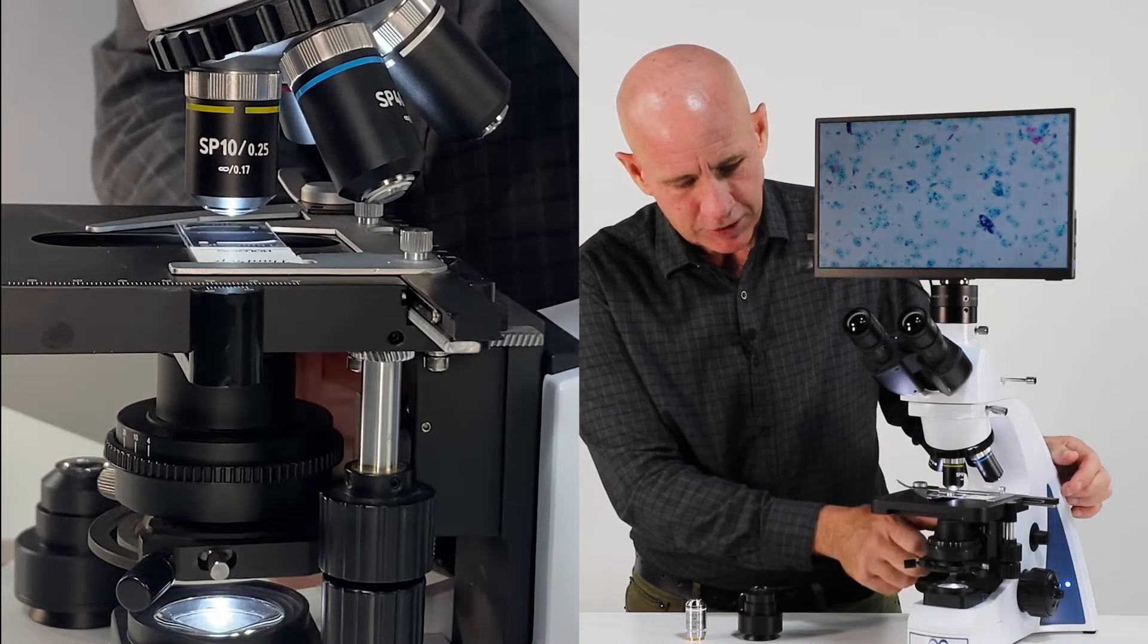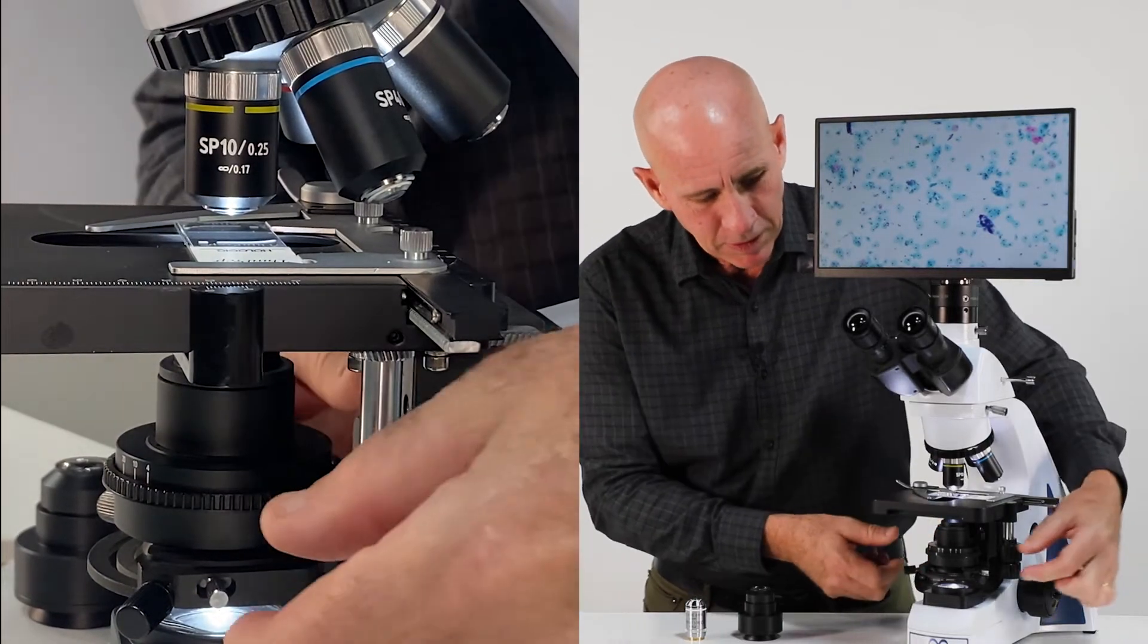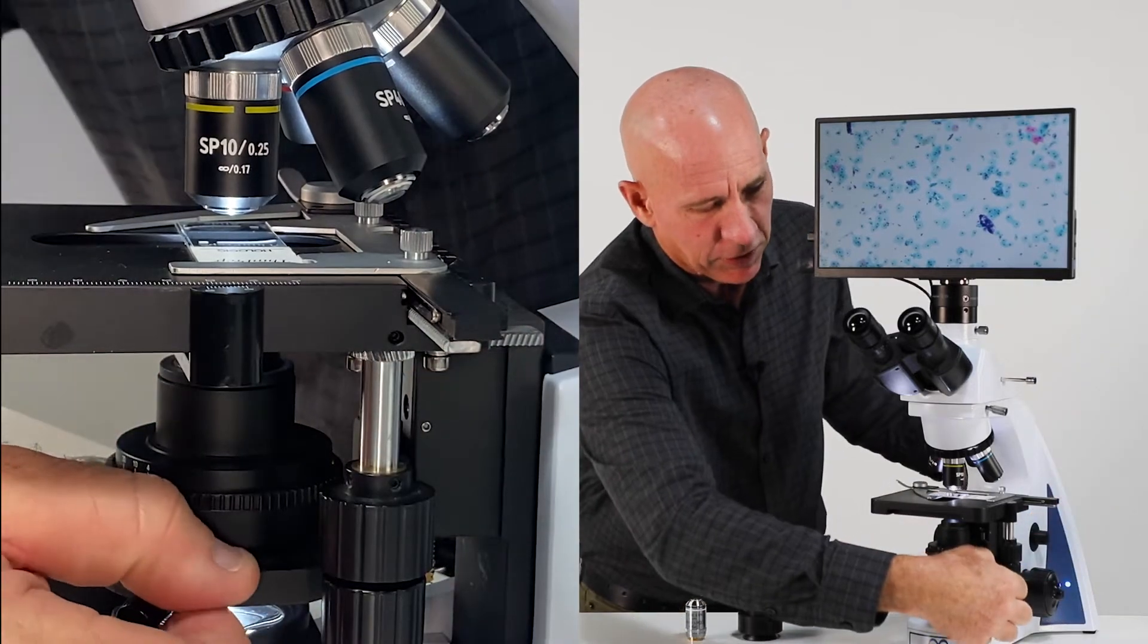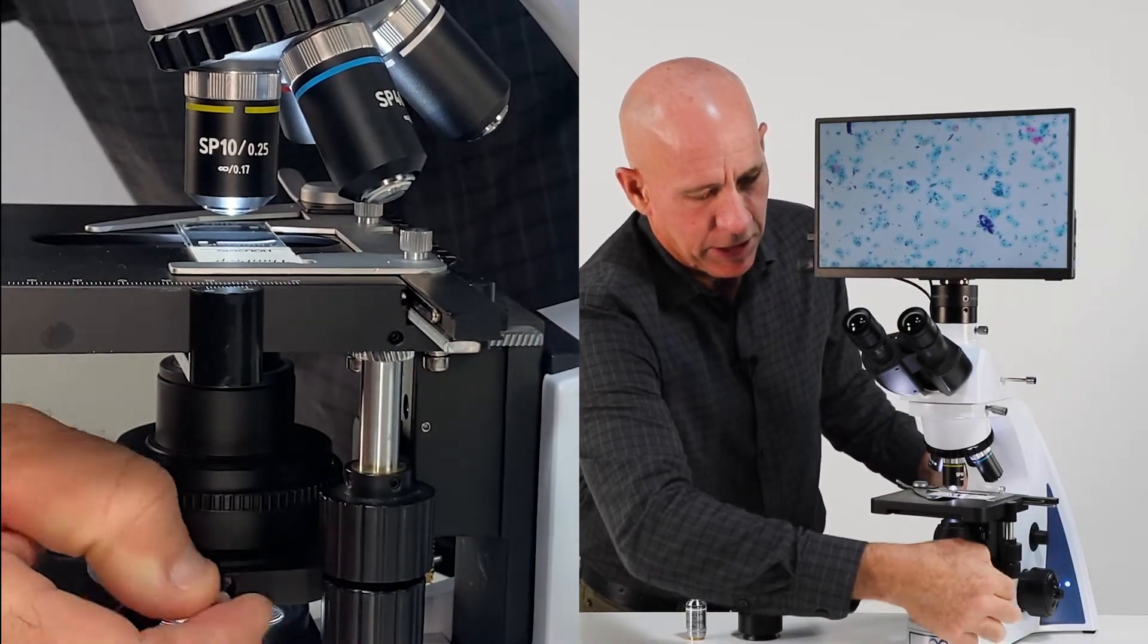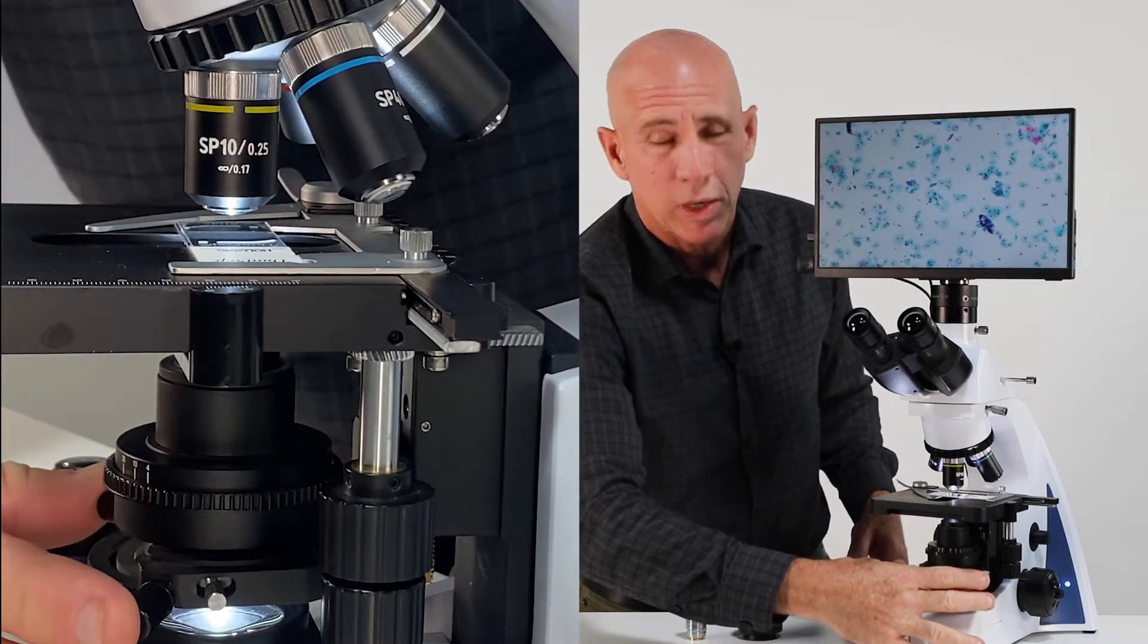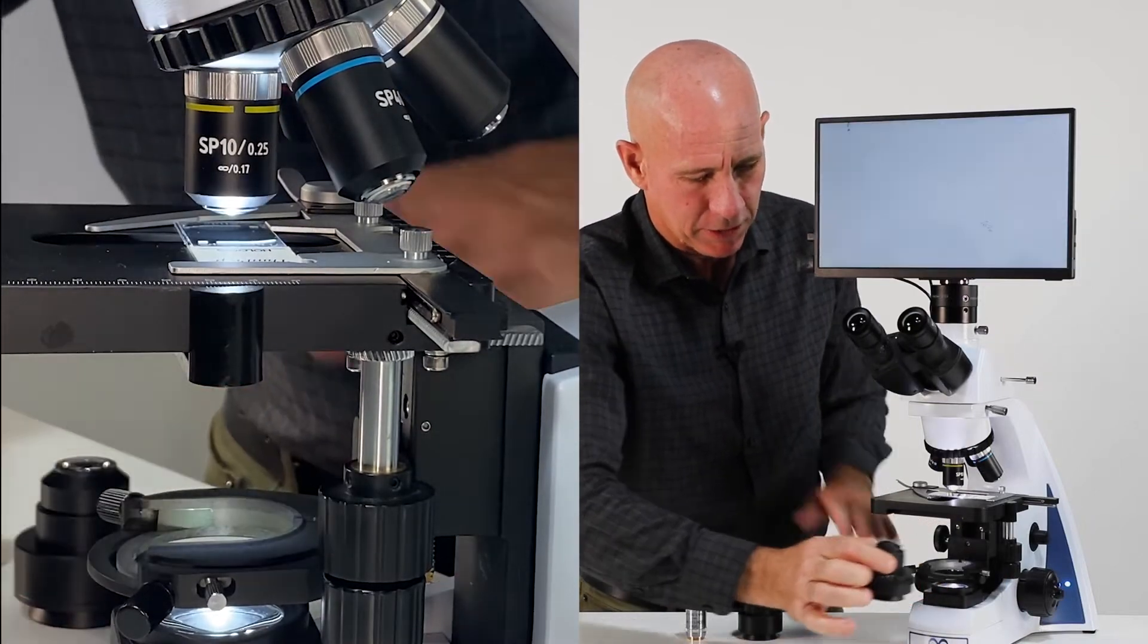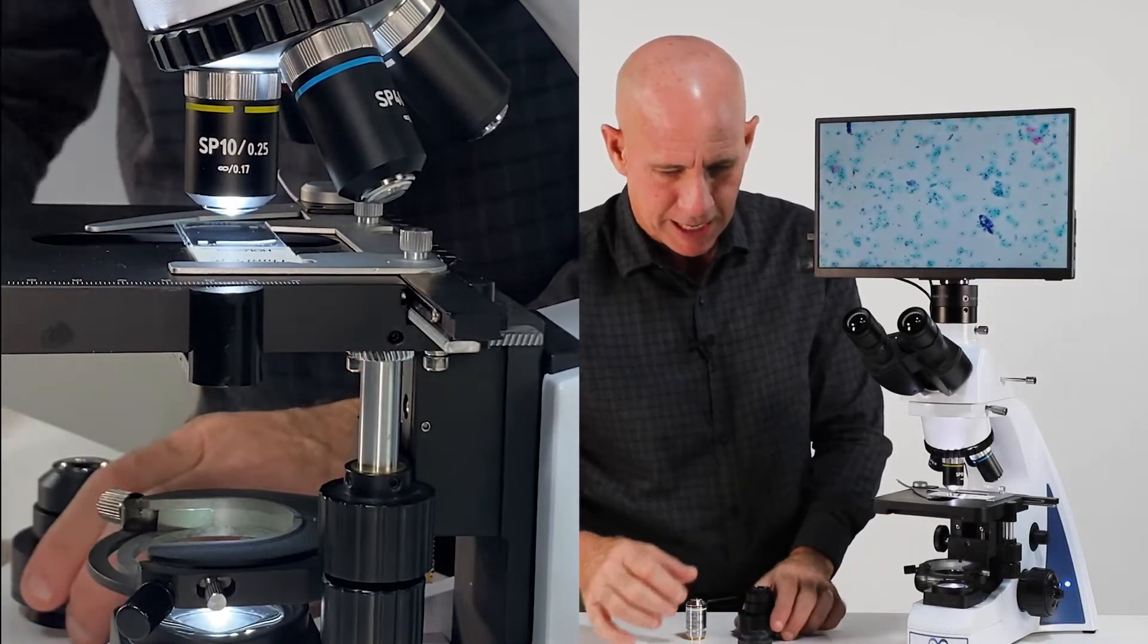So to change over to dark field, first you have to lower the condenser, then you're going to loosen this silver thumb screw that's right here. Don't change the alignment, we'll assume that your condenser is already aligned, but we loosen the silver thumb screw and we can now pull it out. As long as it's lower, it comes out.